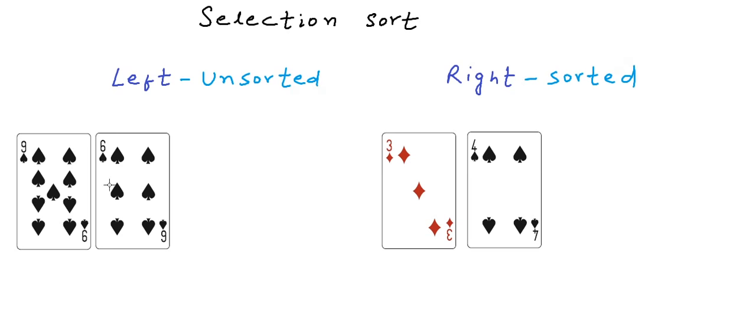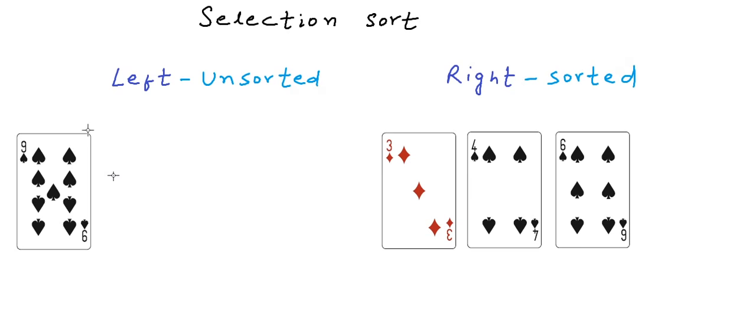So, after three and four, six will go to the right hand. And finally, nine will go. So, in the end, right hand will be a sorted arrangement of cards. Cards will be sorted in increasing order of rank.